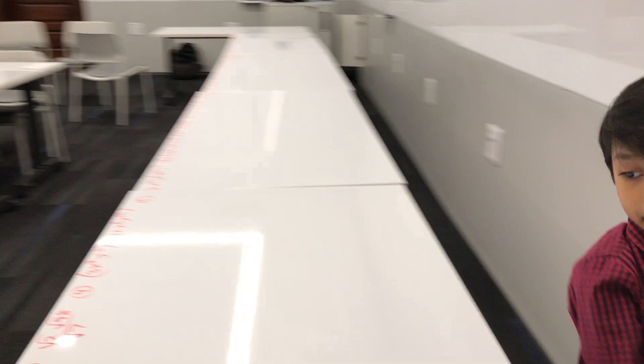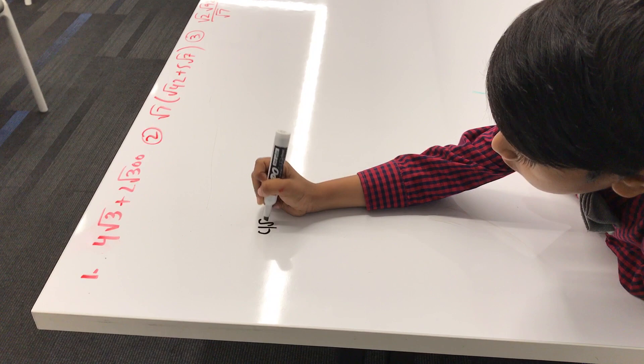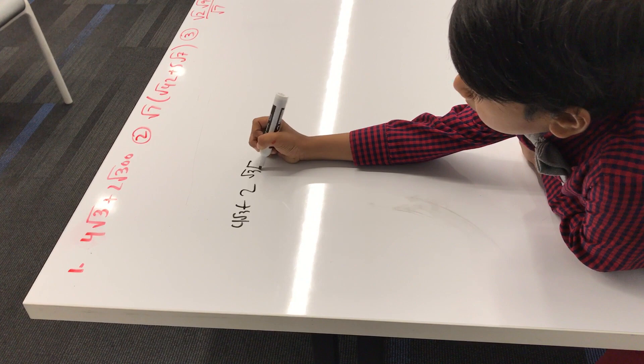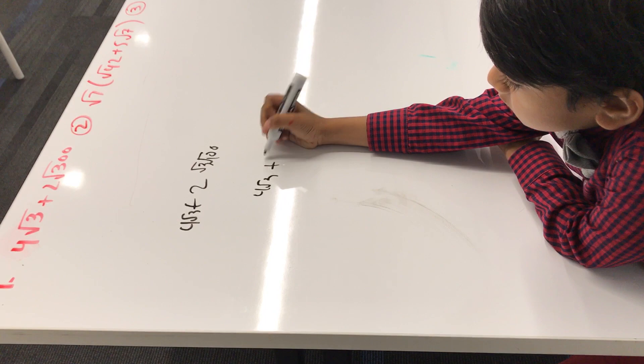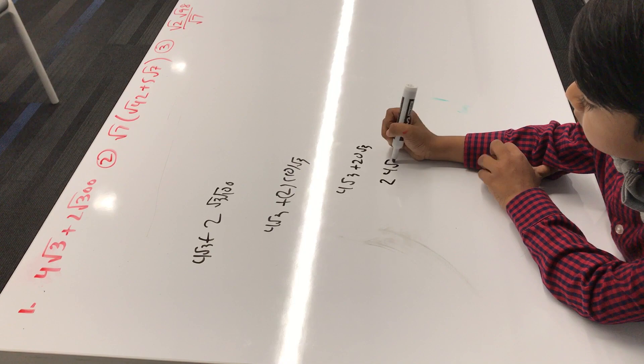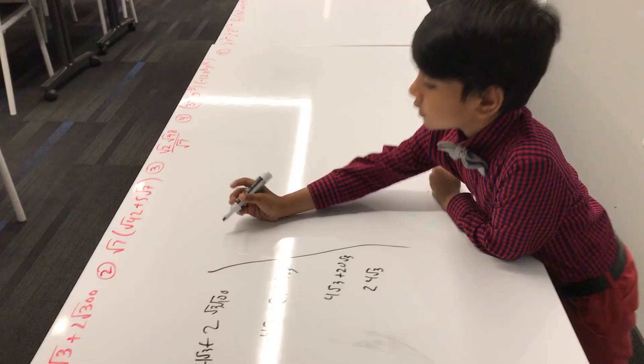4 squared of 3 plus — what two numbers make 300? Well, 103 to be most commonly specific, but that might help us out. So 4√3 plus 2 times 10√3. So that's 4√3 plus 20√3, which makes 24√3. So that's our answer for number 1.